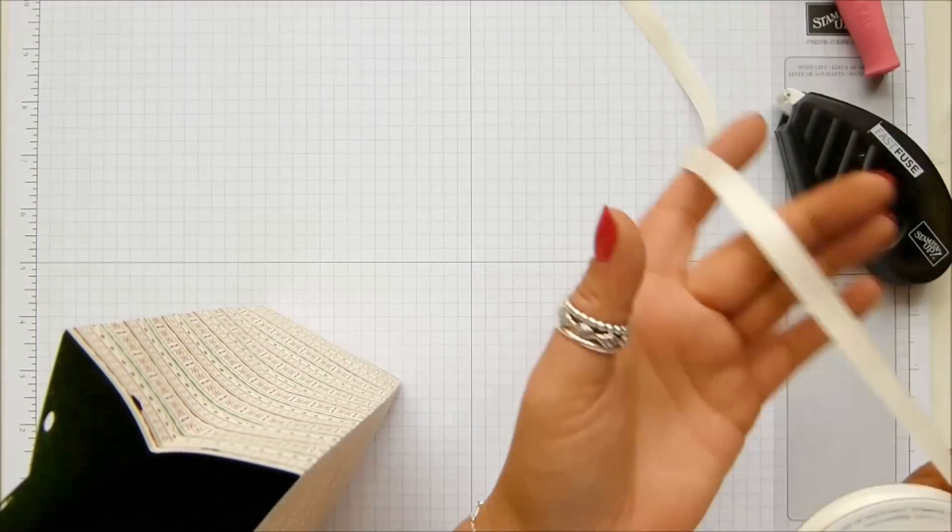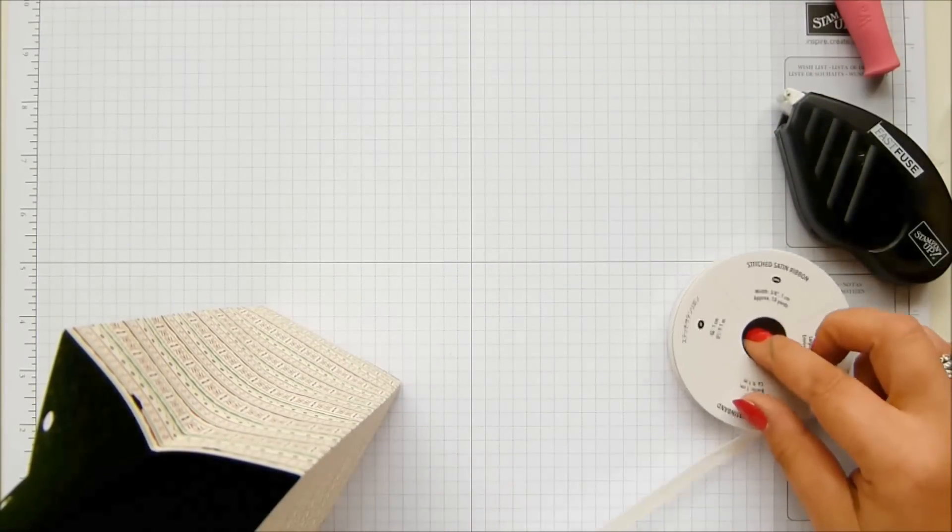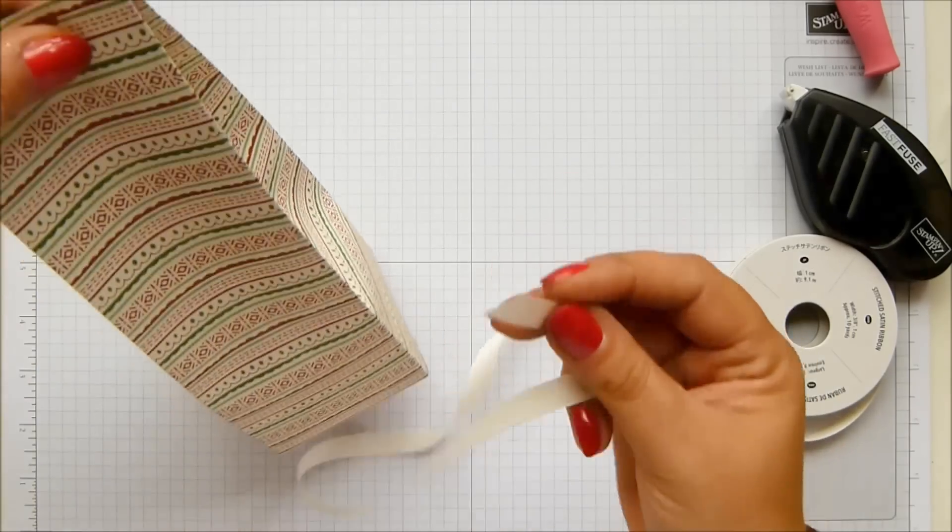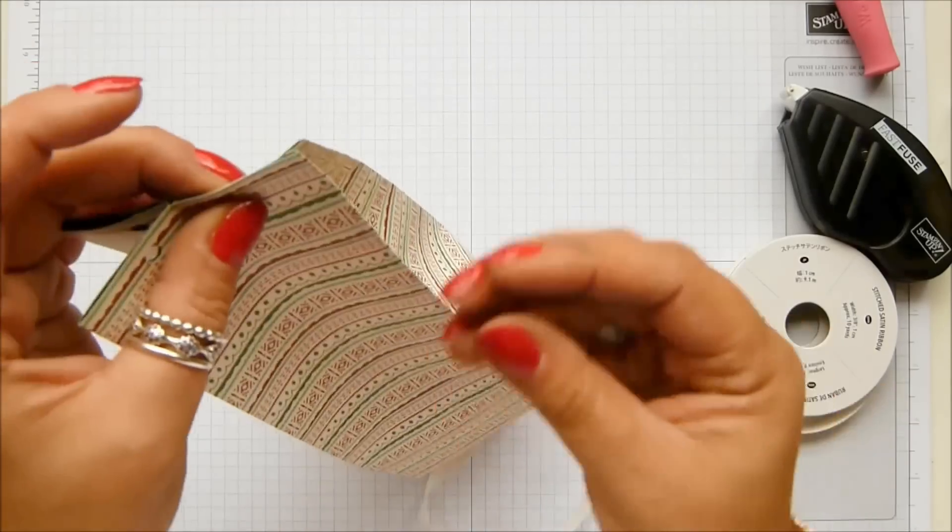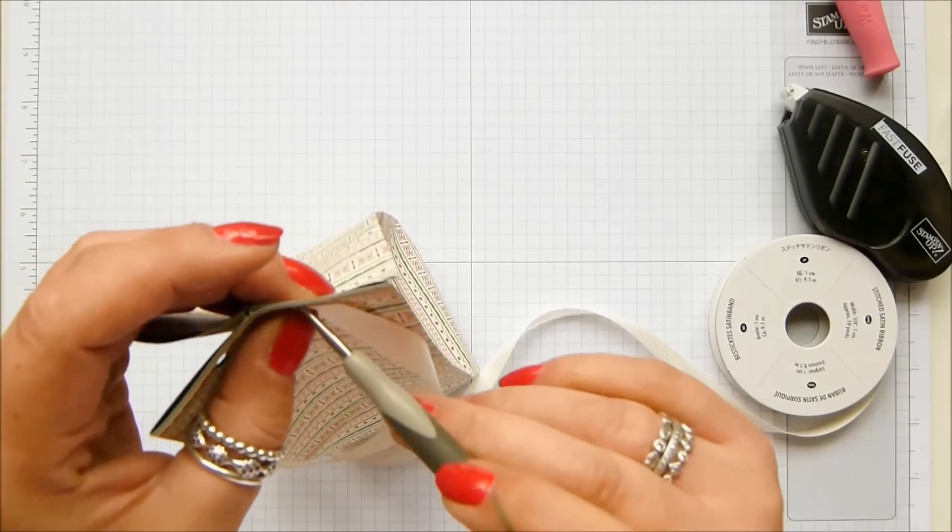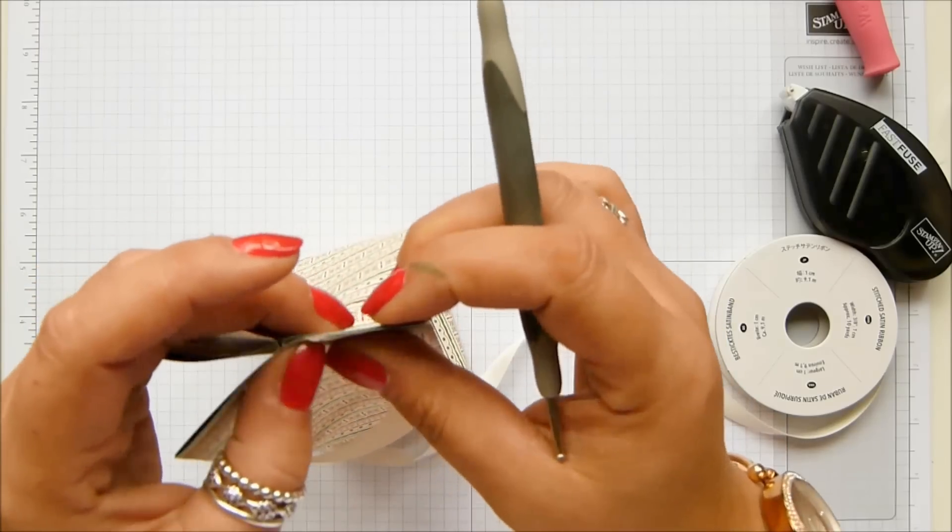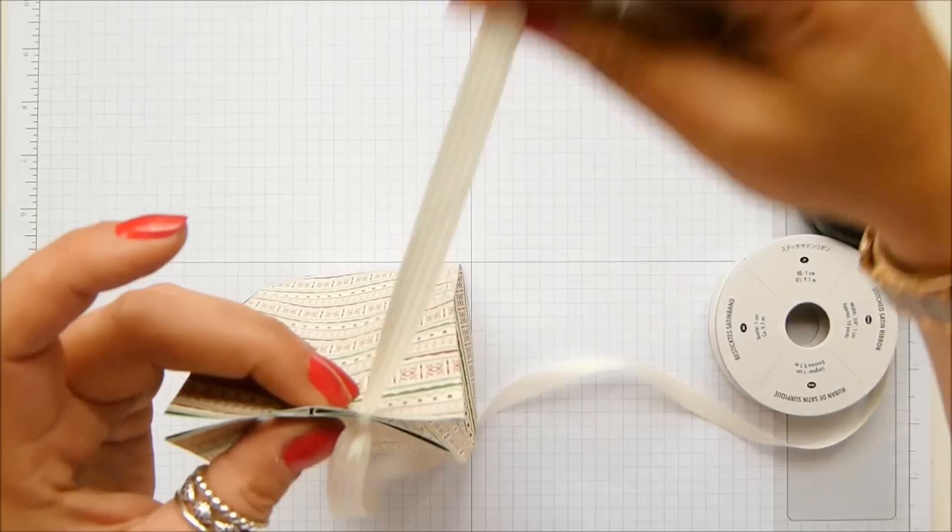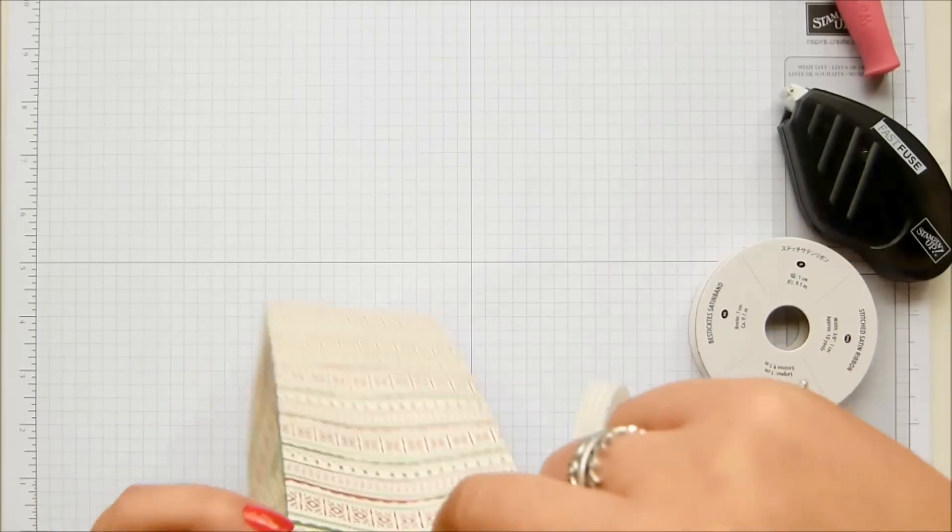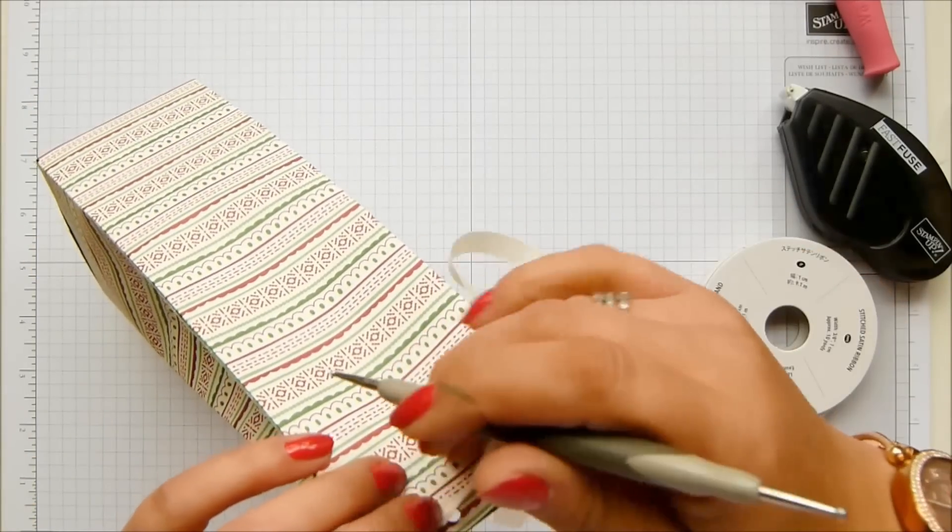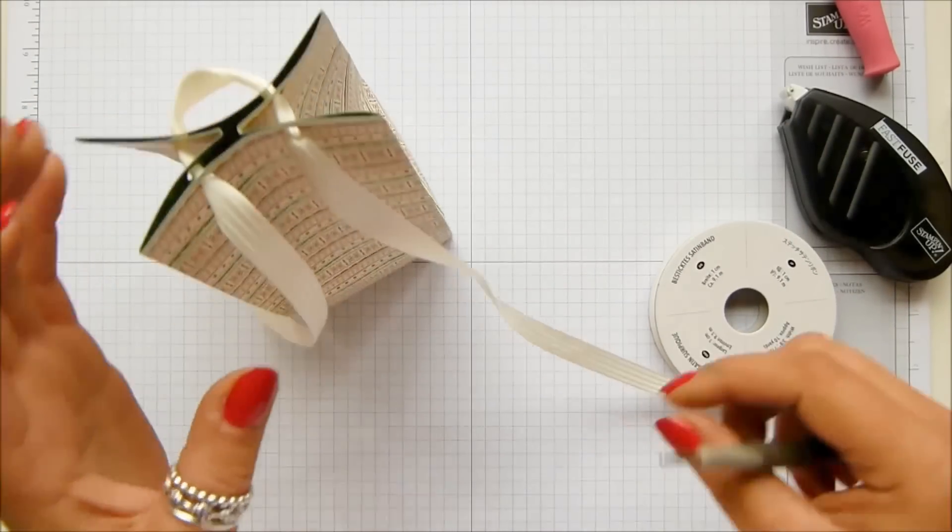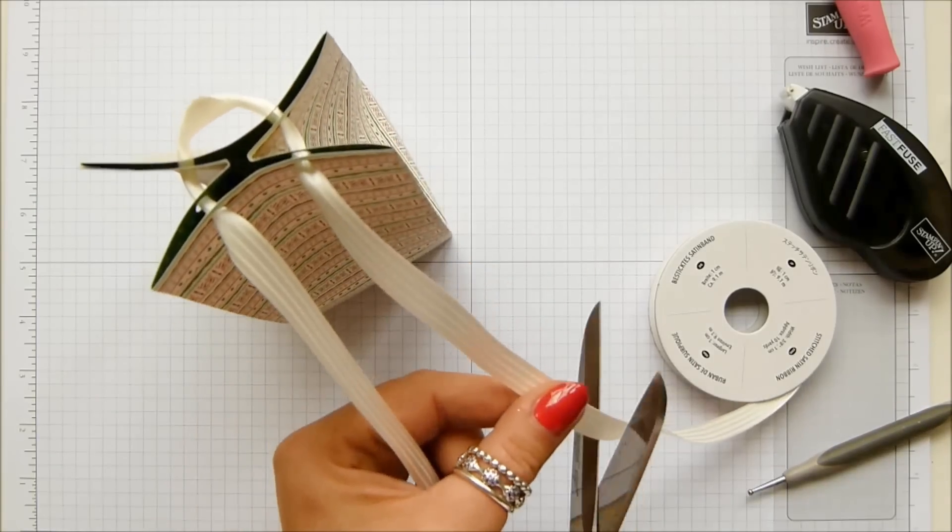And then I can bring in my lovely stitched satin ribbon that is very vanilla and I can go through all of the layers in one go. So again, I'm making sure I'm still at the front and then back through. And after I've done that, I can then manipulate the shape so that I get this pretty open look to it.